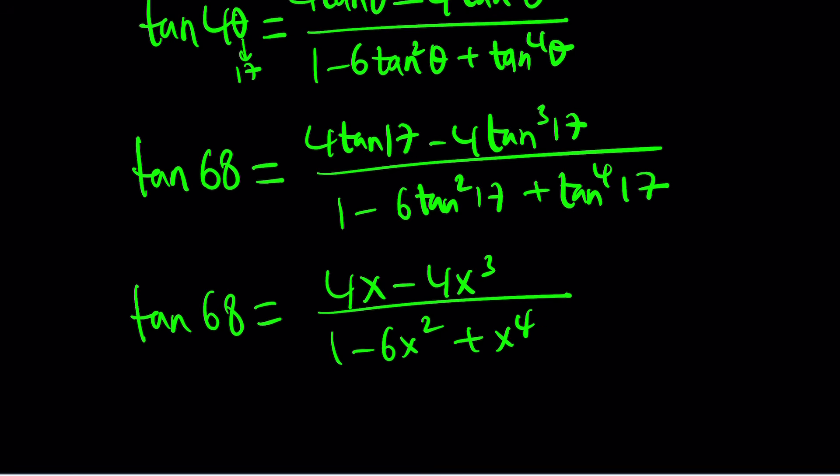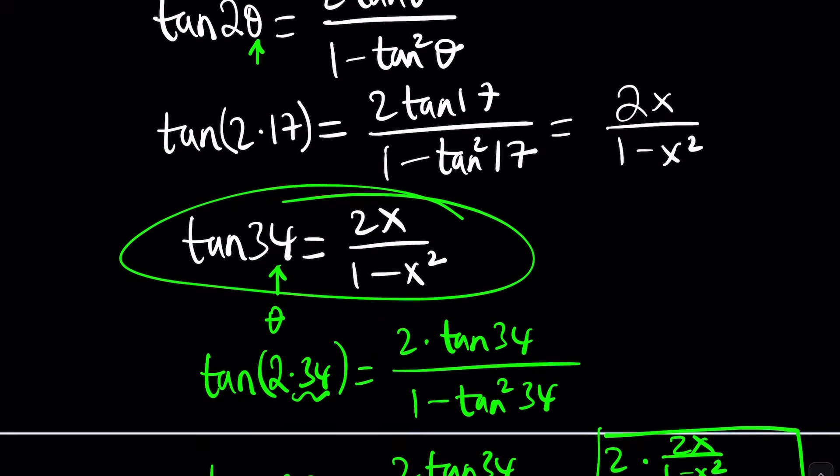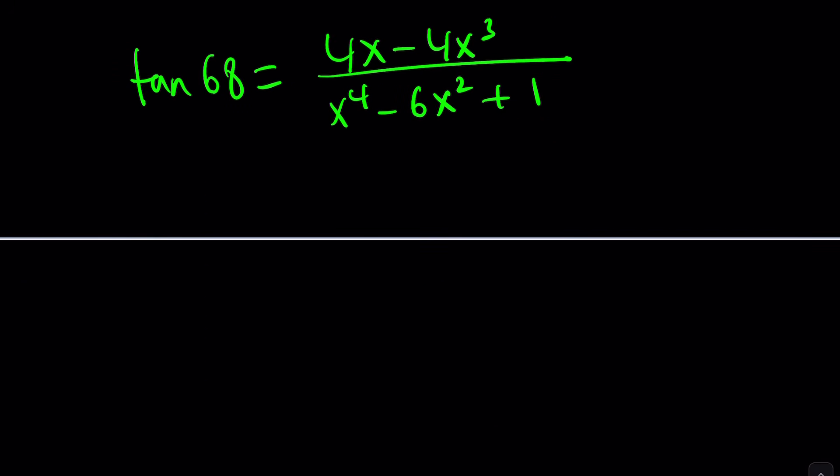Awesome. This is not the end, though, because you can replace tangent 17 with x. Remember? It was 4x minus 4x cubed divided by 1 minus 6x squared plus x to the fourth. By the way, you could probably write this as follows. I think it looks better. x to the fourth minus 6x squared plus 1. Yes, the numerator isn't in standard form, but I think we can do better for the denominator. Now, what are we supposed to do? We were supposed to write tangent 23 in terms of x.